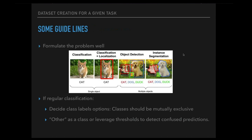For computer vision problems, the commonly used techniques are: classification (normal vs. abnormal), classification plus localization (abnormal with a bounding box), object detection (multiple abnormalities each with bounding boxes), and instance segmentation (pixel-level classification into known abnormalities). It's important to formulate your problem into one of these classes before proceeding.